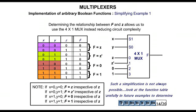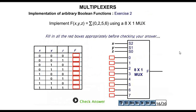For input line 1 (selection x y = 0 1): when z = 0, F = 1, and when z = 1, F = 0, so F = z̄. For input line 2 (selection x y = 1 0): F = 0 for both values of z. For input line 3 (selection x y = 1 1): F = 1. So the multiplexer is designed with selection lines S0, S1 connected to x and y, and the input lines set to z, z̄, 0, and 1 respectively.